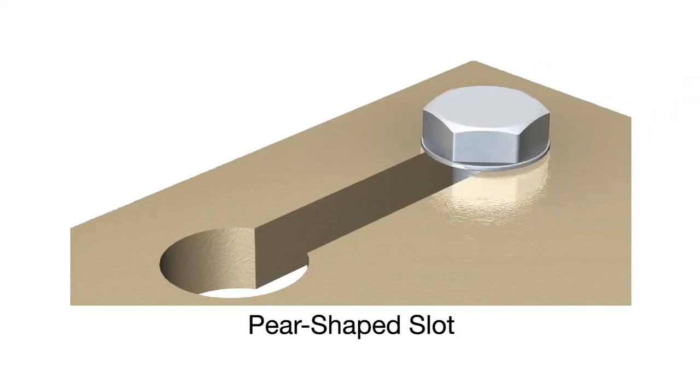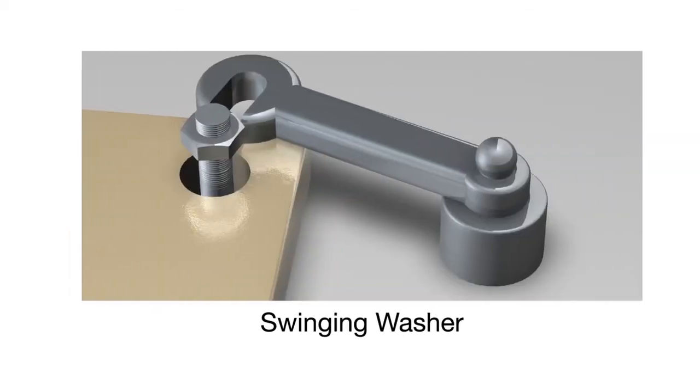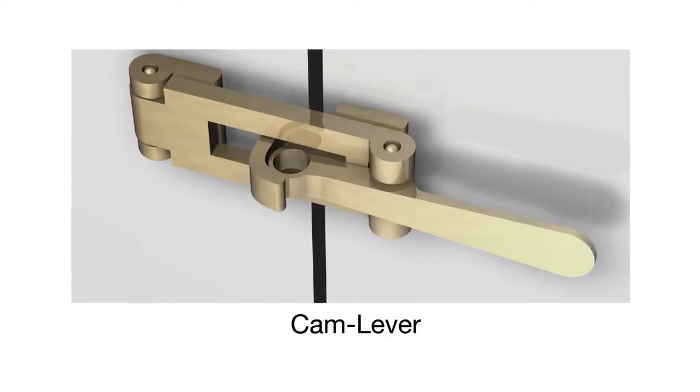Other quick connection devices for machine coverings include pear-shaped slots, swing washers, and cam levers. Pear-shaped slots allow operators to simply loosen the nut and slide the cover off, while a swinging washer eliminates the need for a washer to be found and placed over a threaded bolt to attach a plate. It is simply swung into place and the cover is firmly attached. Cam levers, on the other hand, remove the need for a tool or bolt altogether with one easy motion.